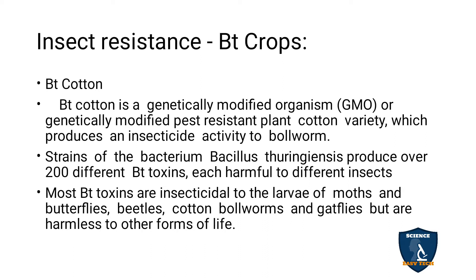Strains of bacterium Bacillus thuringiensis produce over 200 different BT toxins, each harmful to different insects — so the Bacillus thuringiensis produces 200 different strains which can attack various insects.